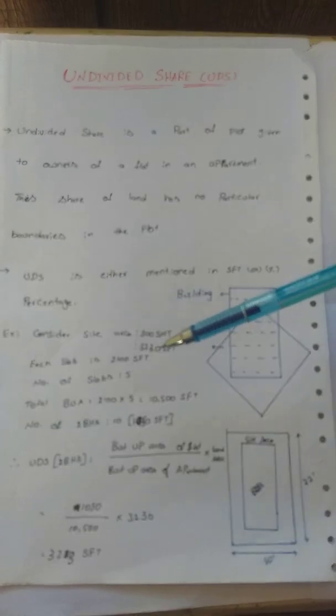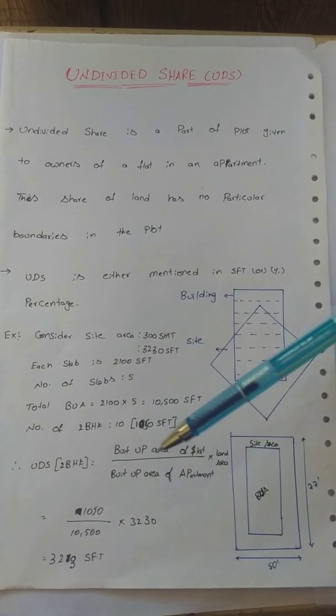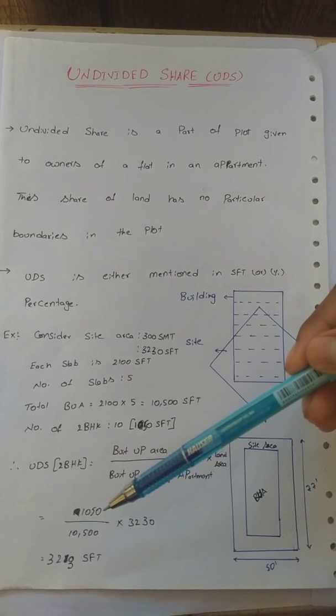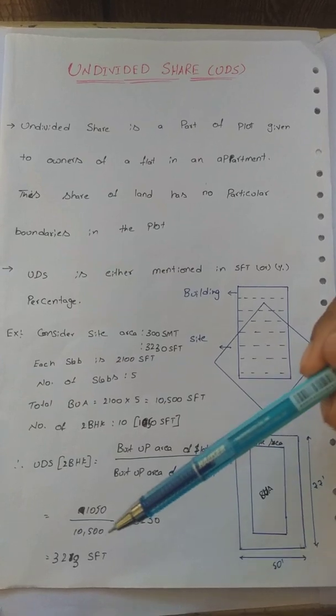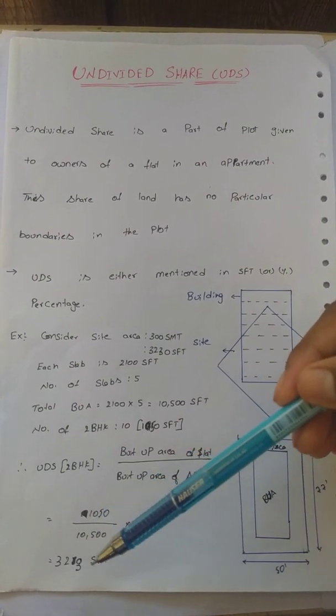Calculate: 1050 divided by 10,500, multiplied by 3230. Then we have 323 square feet.